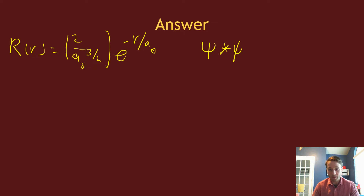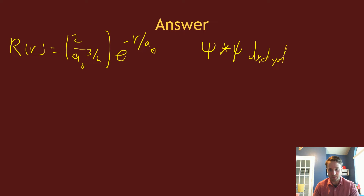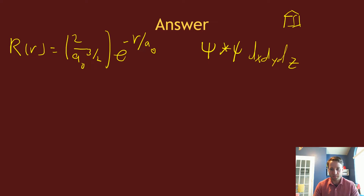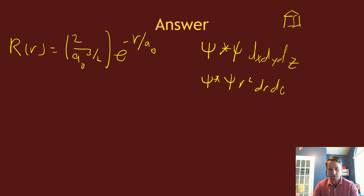In radial coordinates, the probability of being in some small amount of space is related to ψ*ψ times dx dy dz — that's the probability of being in some tiny cube of space. In spherical coordinates this becomes ψ*ψ · r² dr dθ sinθ dφ.